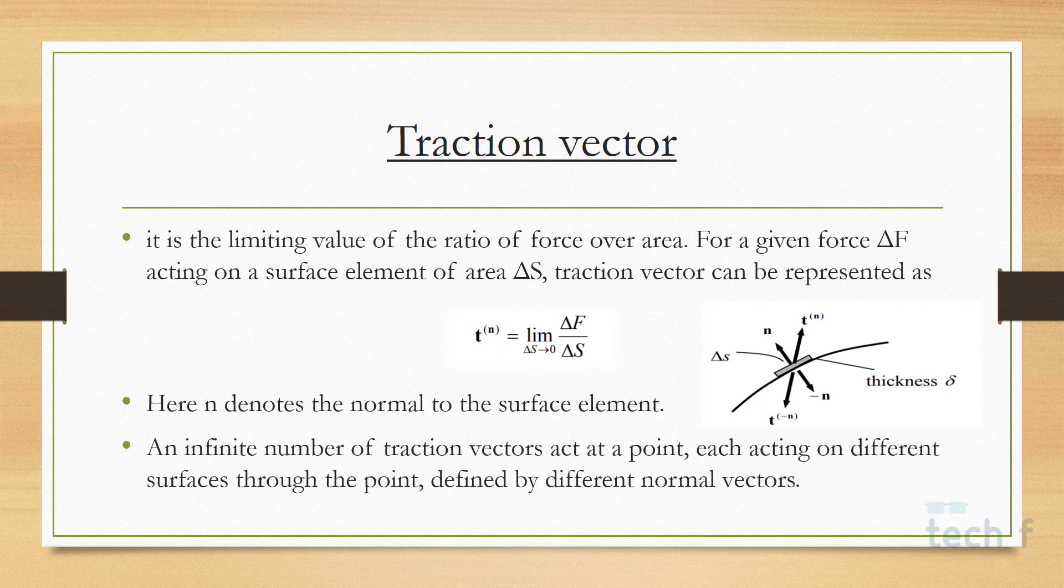But when we limit the area to zero, that is when the area tends to zero and approaches a point, then this traction can be termed as a traction vector. Here n denotes the normal to the surface element.